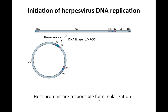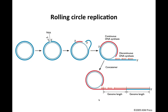Now we have a circular double-stranded DNA. You're probably thinking it must replicate like SV40 — bidirectional, semi-discontinuous replication with two replication forks and a bubble. The answer is no, it doesn't replicate that way at all. It replicates by the rolling circle mechanism, as shown on this slide.